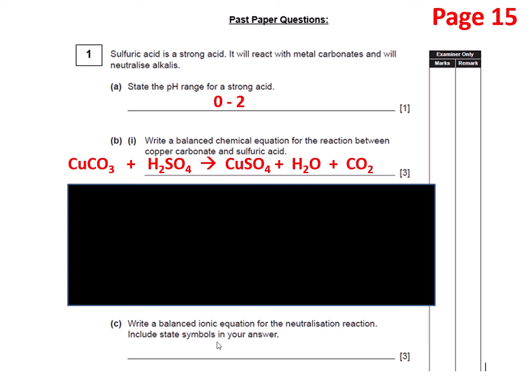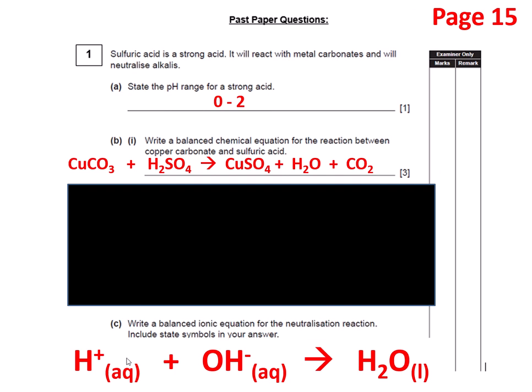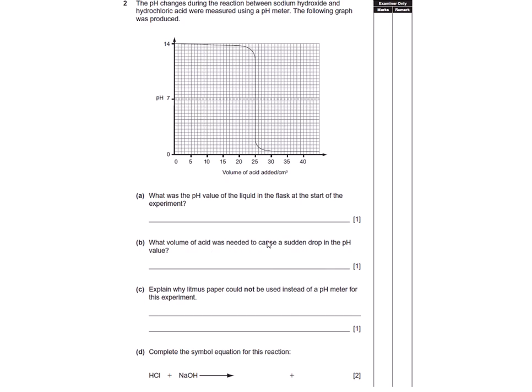The ionic equation: H+, so that's the ion that acids give off, OH-, that's what alkalis give off and then they turn into water. So one mark for getting H+ and OH-, one mark for H2O and then include state symbols: aqueous, aqueous and liquid. So three marks. Really important question that, so really look over it. It comes up over and over again in past paper questions.